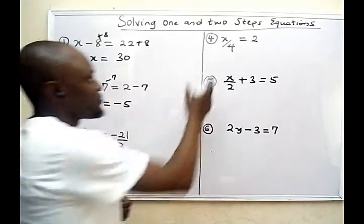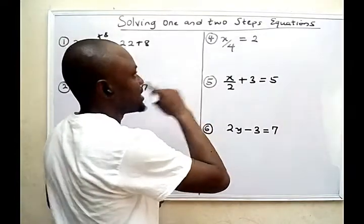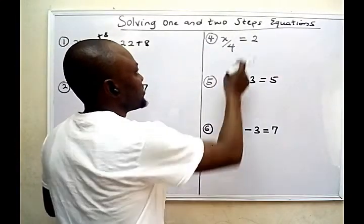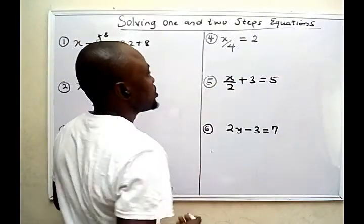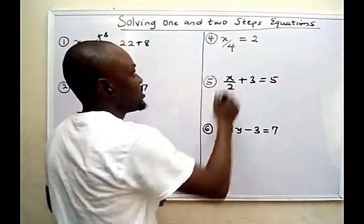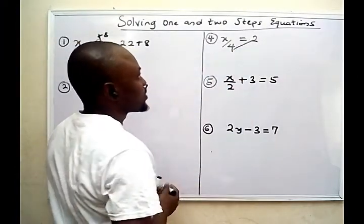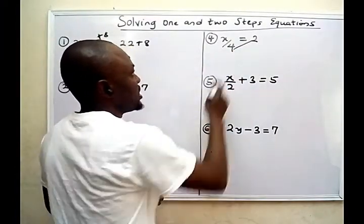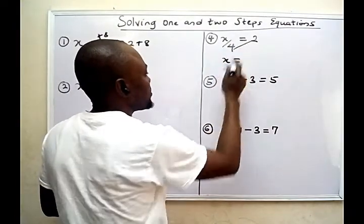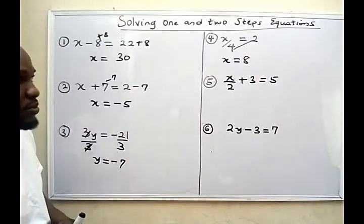For the fourth question, you can see this is in the form of a fraction. When you have a question like this, just cross multiply. If you do that, x will be 4 times 2, which is 8. That's pretty simple.